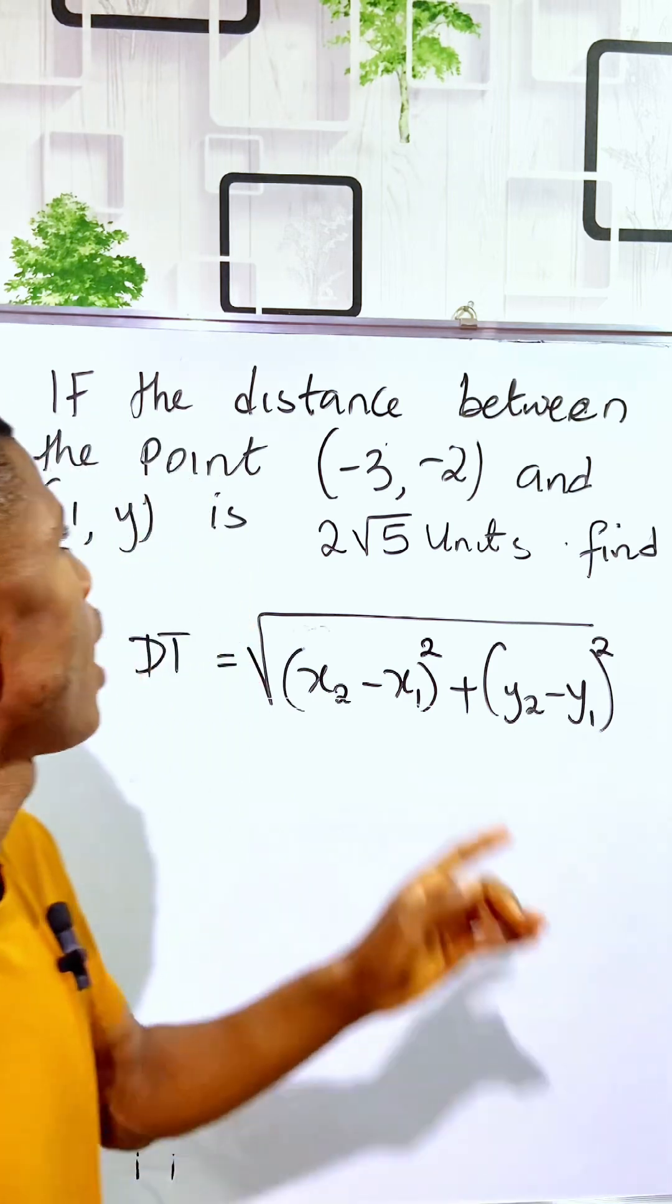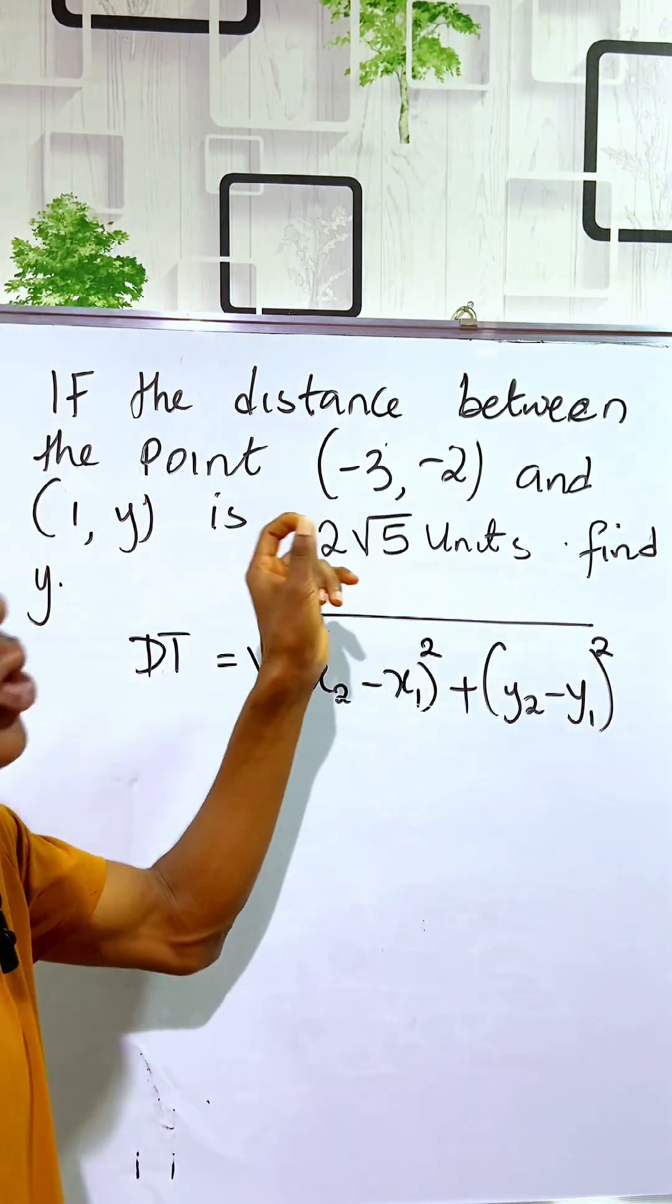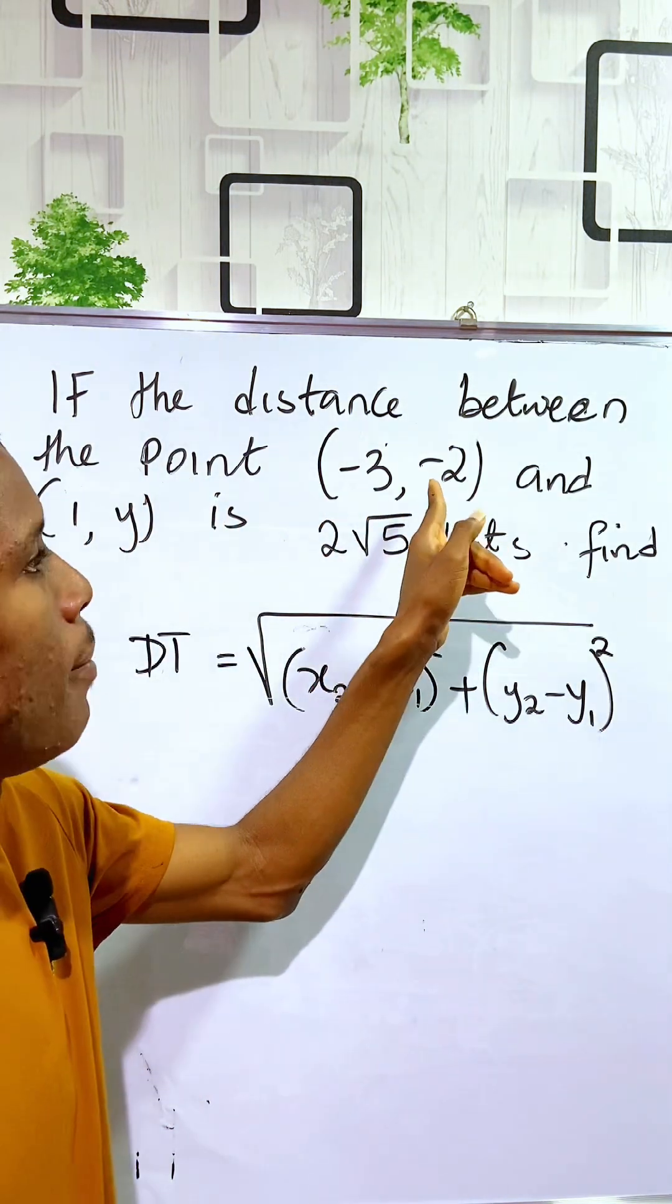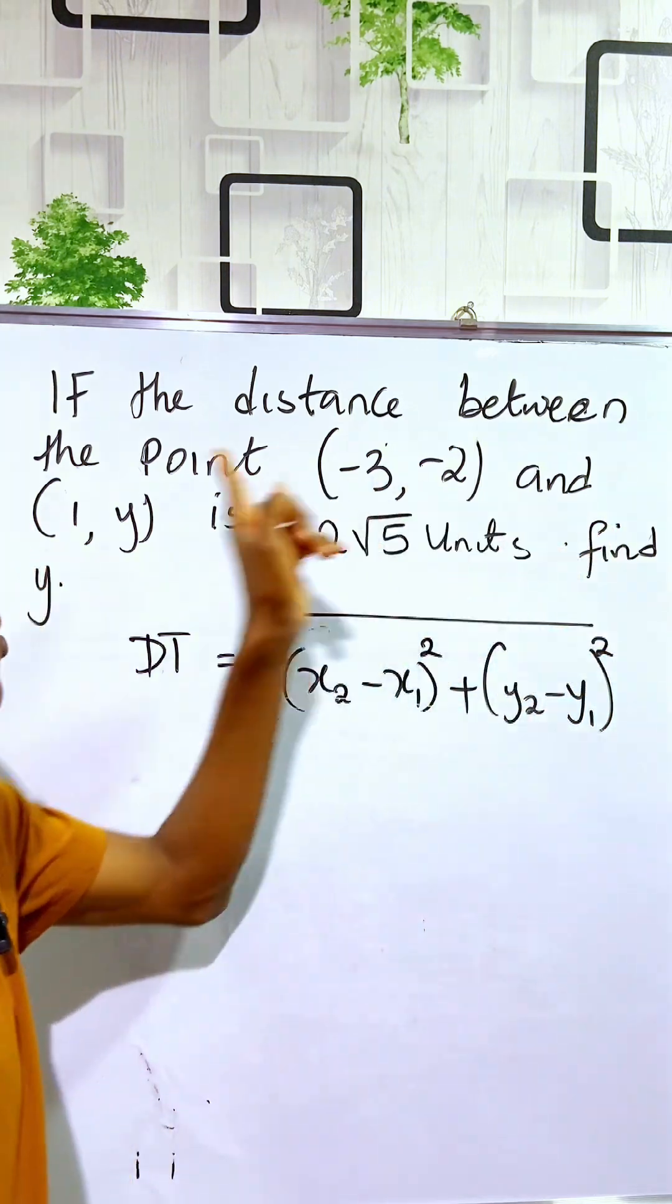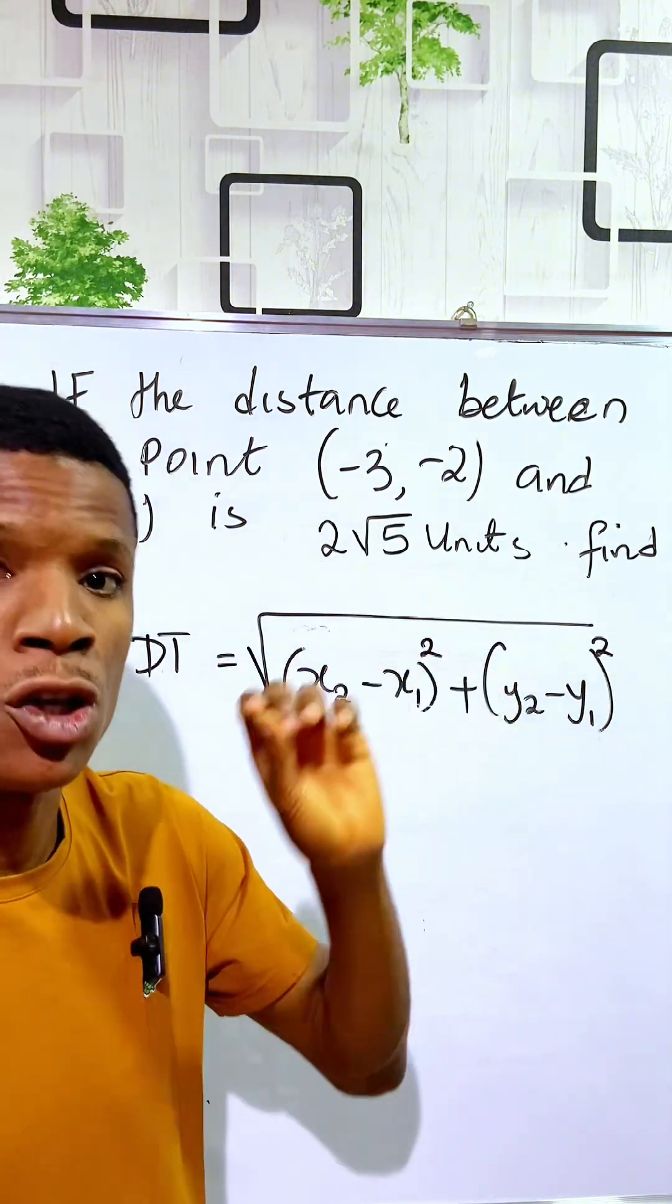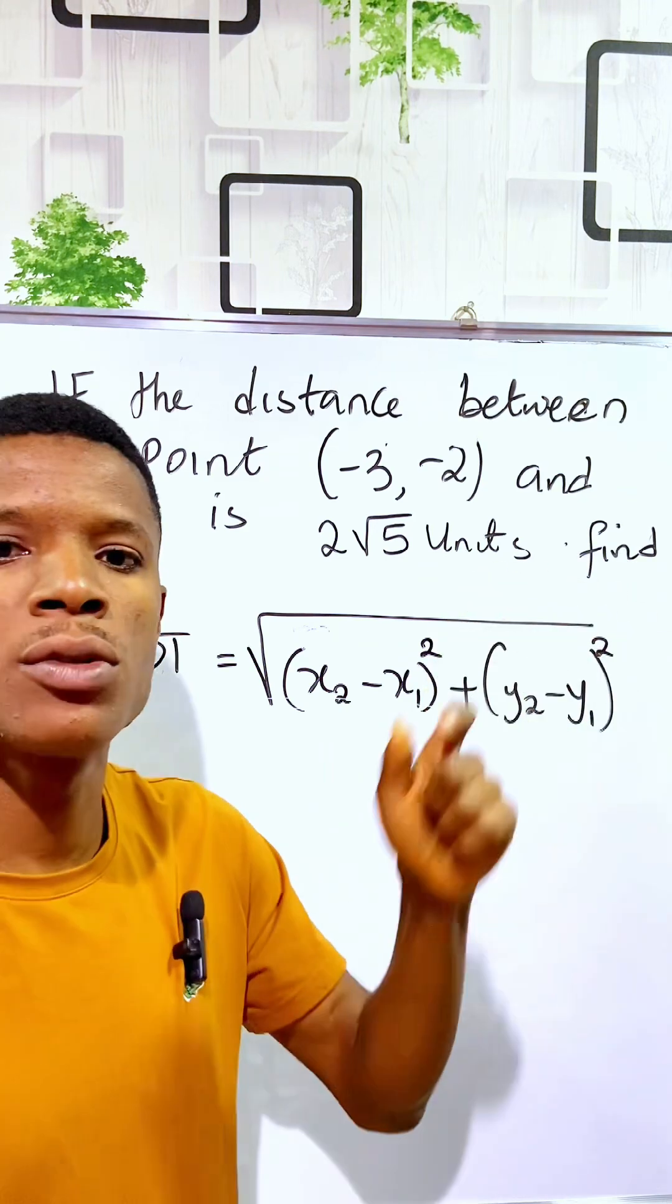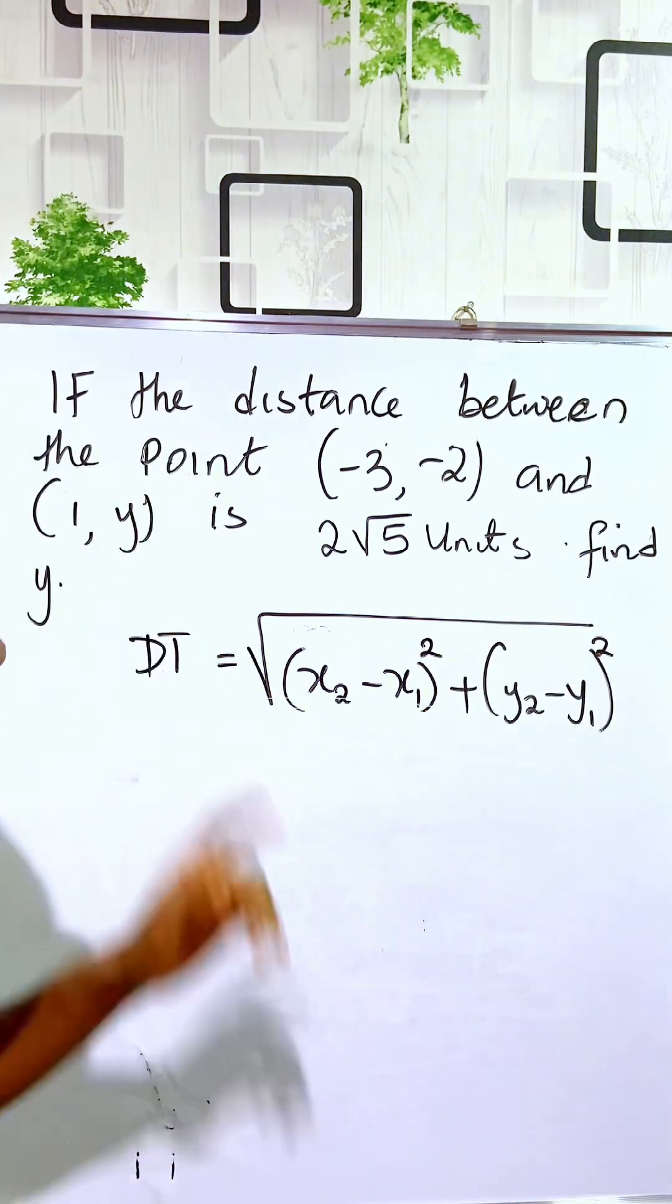Here we are told if the distance between the point (-3, -2) and (1, y) is 2√5 units, we are told to find the value of y.